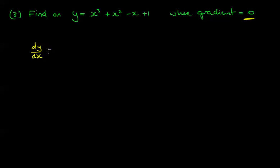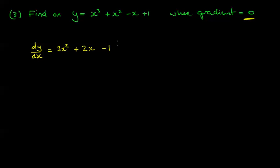Differentiating: dy/dx = 3x² + 2x − 1. We want to find when this gradient function equals 0 — what values of x make this equal to 0? So we need to solve the equation 3x² + 2x − 1 = 0.